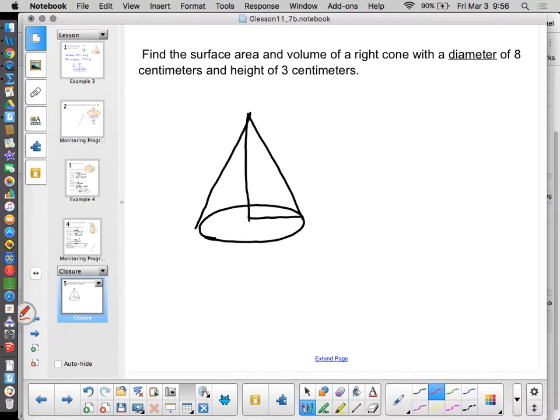What facts are we given? We're given the diameter of the base. Oh, the diameter is 8, which means the radius is 4, okay, centimeters. The height of the cone, we're told, is 3 centimeters. I need to find the volume and the surface area, okay, surface area and volume.